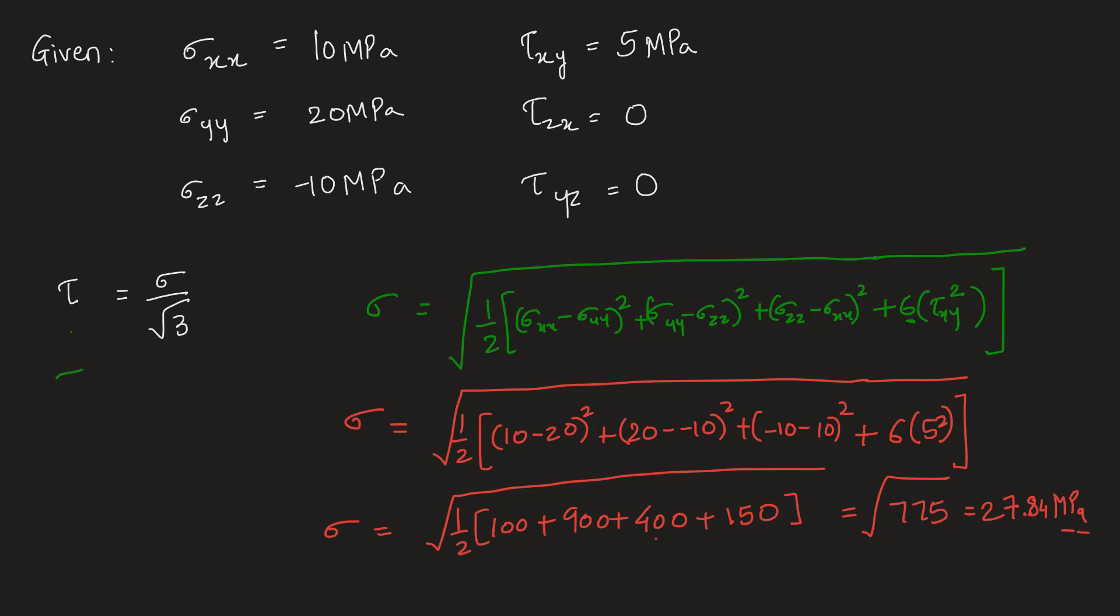Let's put here to find out the shear yield strength. Tau will be equal to 27.84 by root 3, and by calculating this in the digital calculator we get tau is 16.07 megapascal.